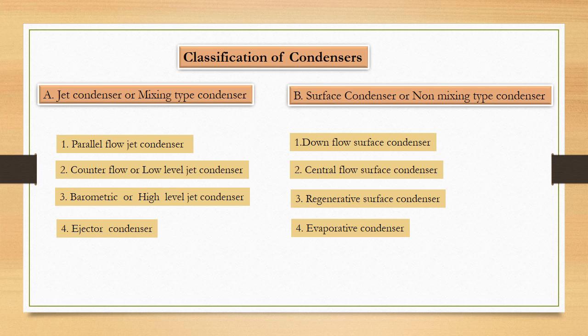They are: parallel flow jet condenser, second one is counter flow or low level jet condenser, third one is barometric or high level jet condenser and fourth one is ejector condenser.